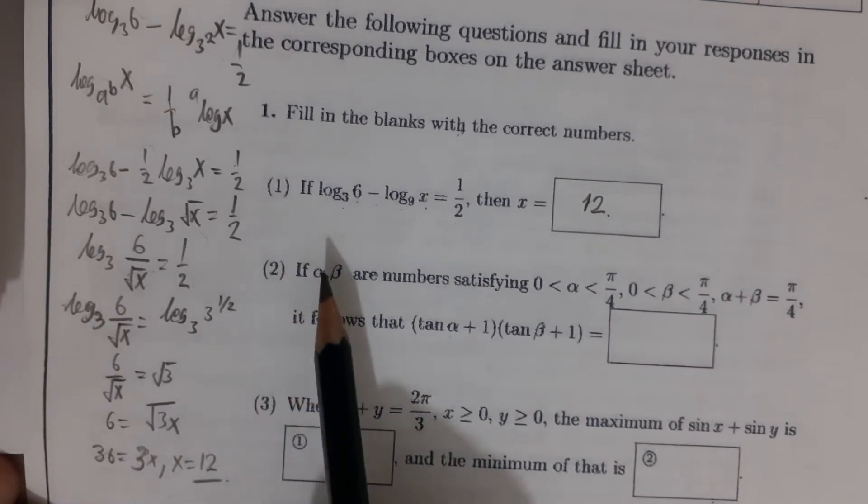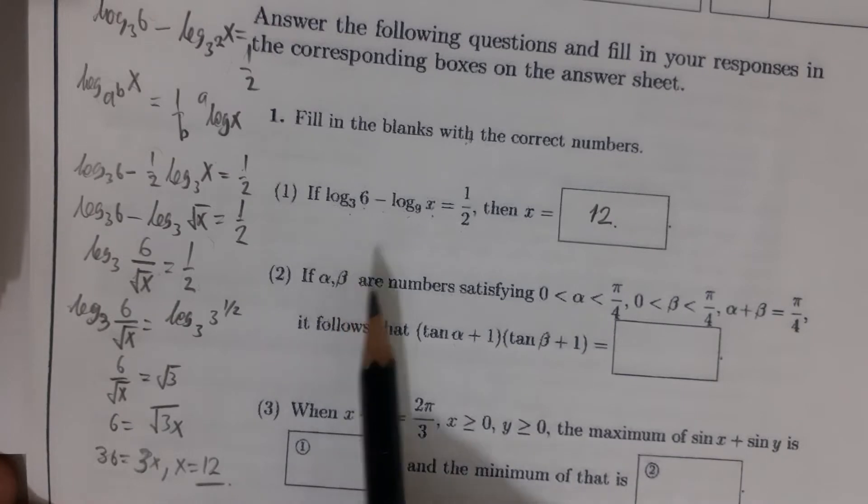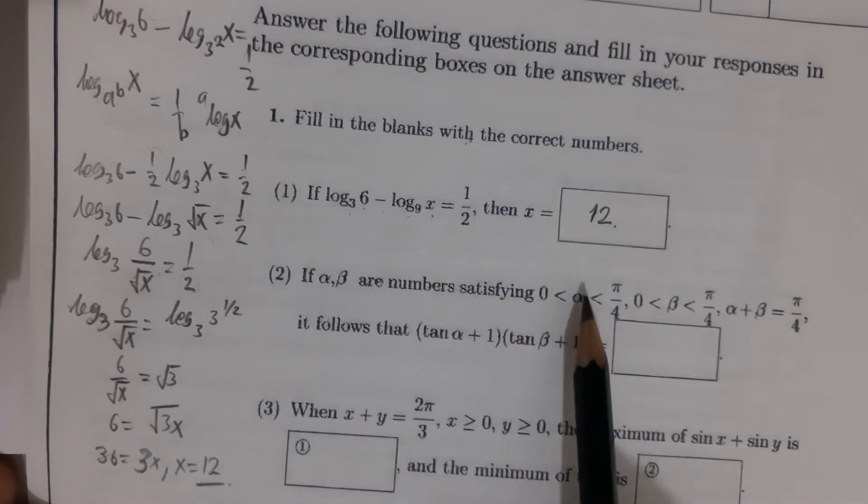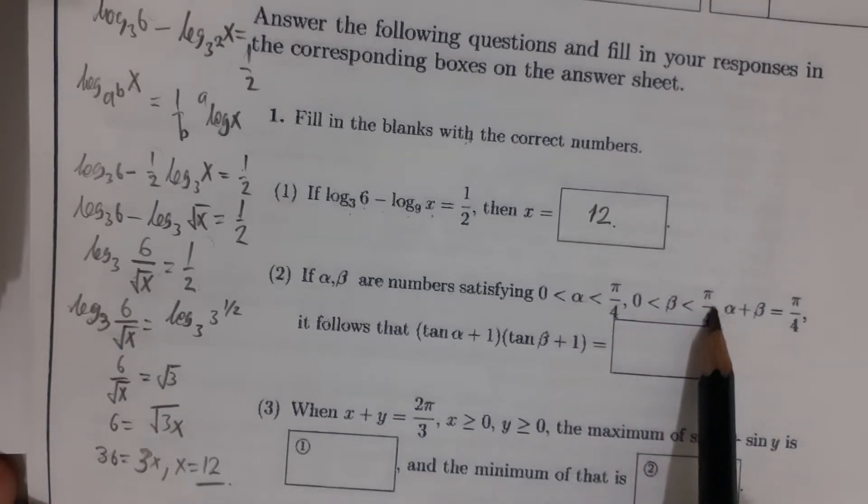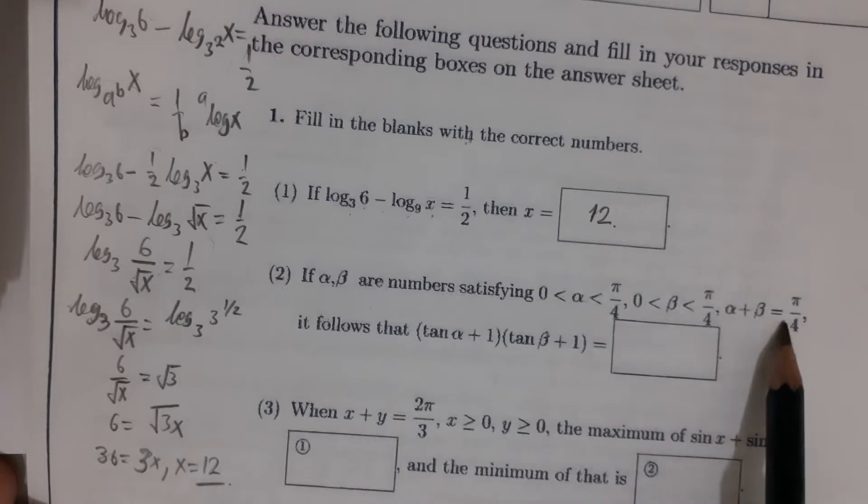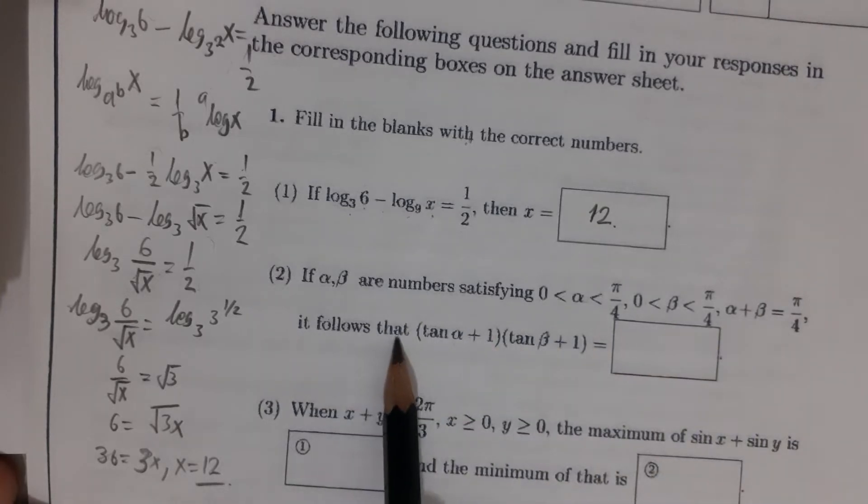If alpha and beta are numbers satisfying 0 < α < π/4 and 0 < β < π/4, and α + β = π/4, it follows that (tan α + 1)(tan β + 1) equals what?